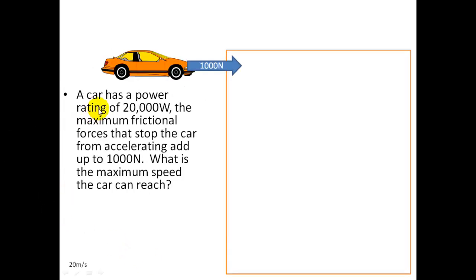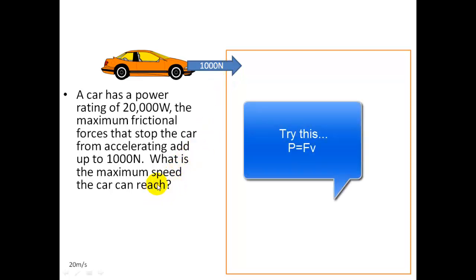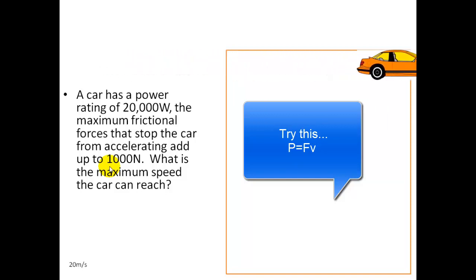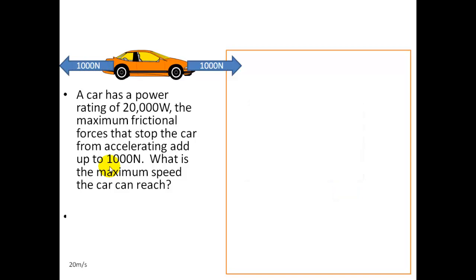Here is an example. A car has a power rating of 20,000 watts. The maximum frictional forces that stop the car from accelerating add up to 1,000 newtons. So in other words, there is a frictional force of 1,000 newtons, which means you must push forward with a force of 1,000 newtons to be able to overcome that. So what is the maximum speed the car can reach? So power, which is 20,000, is equal to force, which is 1,000, times by the maximum speed. So according to this, it would be 20 meters a second. So these forces are balanced.